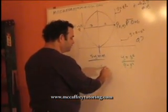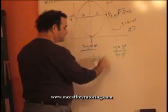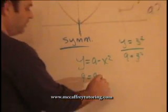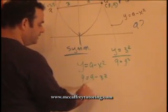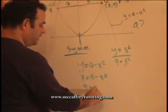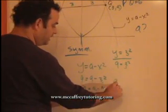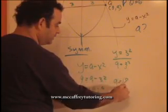y equals a minus x squared. I'll put in my two points. 9 equals a minus 3 squared. 9 equals a minus 9. Add 9 to both sides. a equals 18.